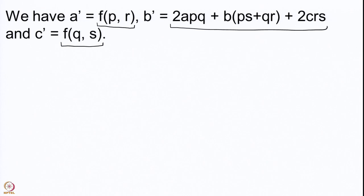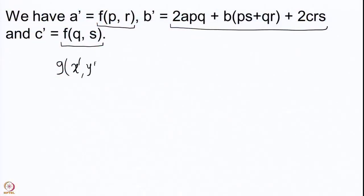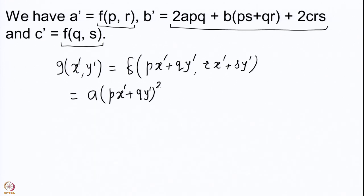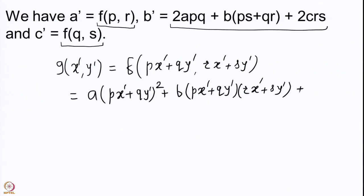Let us start doing computations. We have G(x', y') = F(px' + qy', rx' + sy'). So we expand: A(px' + qy')² + B(px' + qy')(rx' + sy') + C(rx' + sy')².